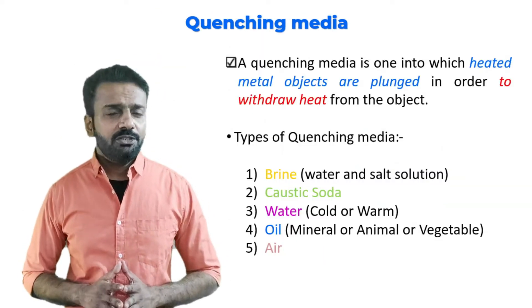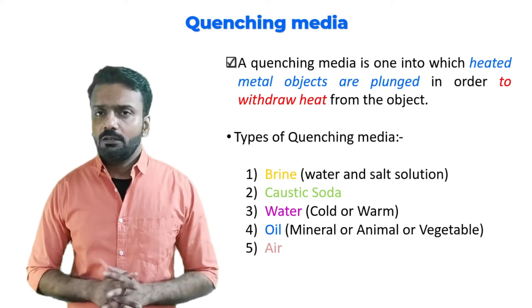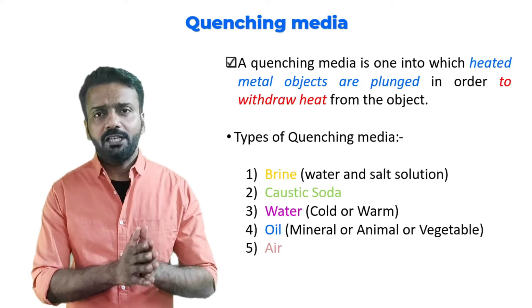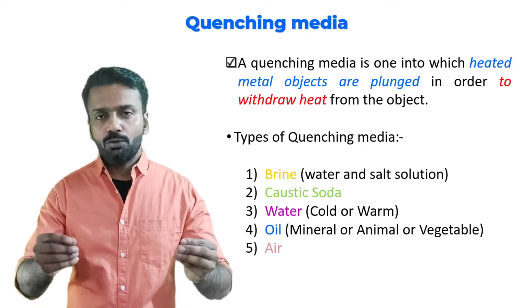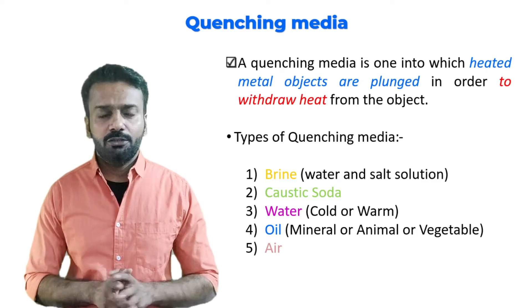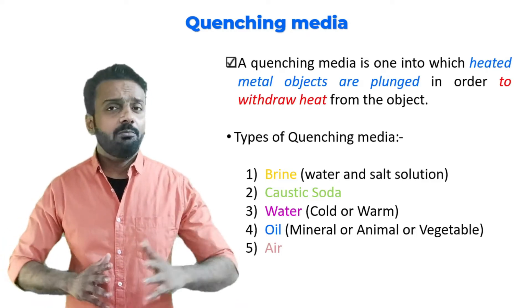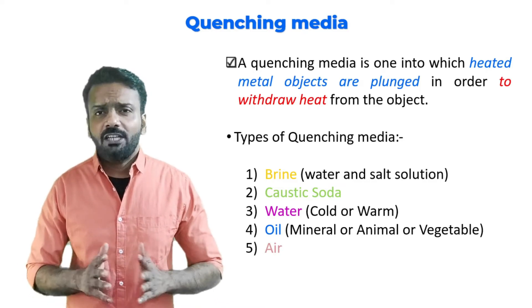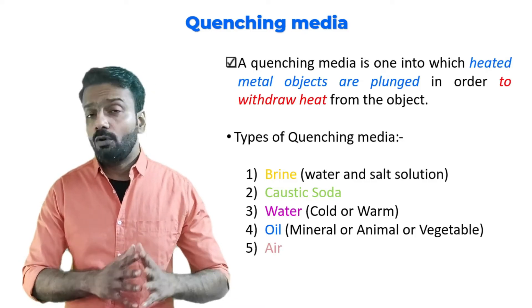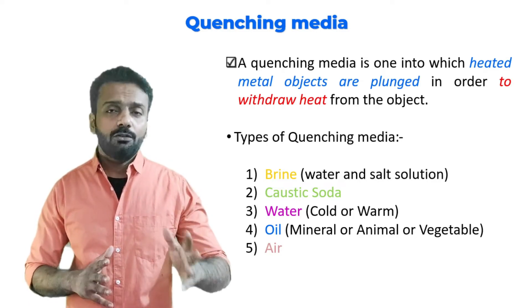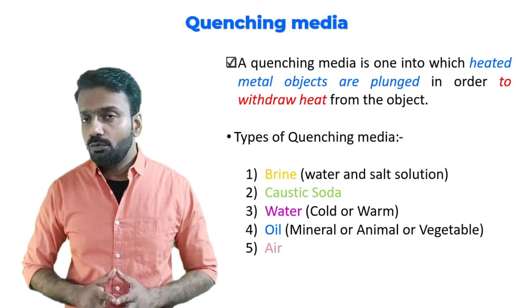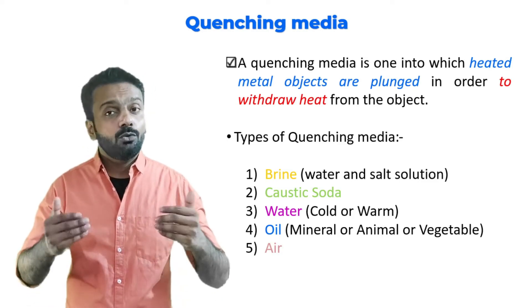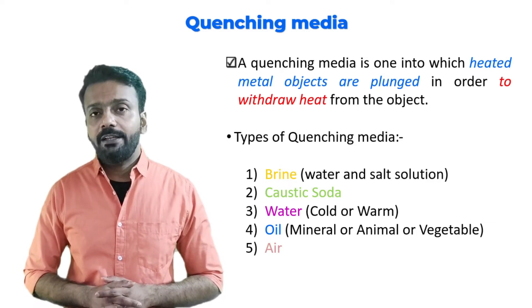Just some additional information: during hardening heat treatment, there are different quenching mediums we can use. Quenching media are the sources for how we cool the material. Different sources are available: brine solution, caustic soda, water (cold or warm), oil, and air.